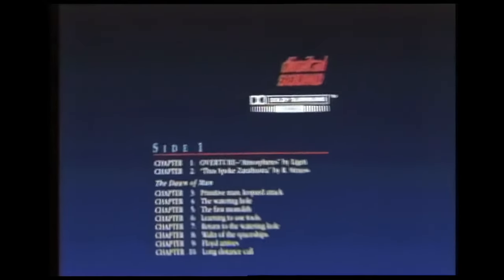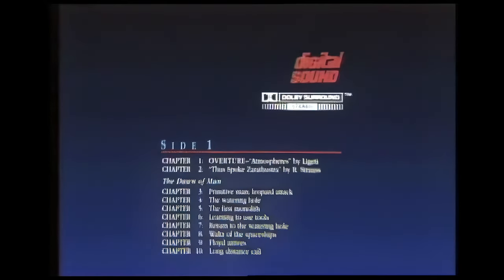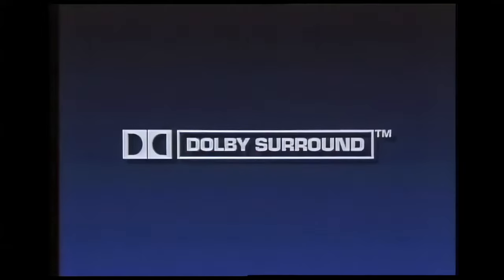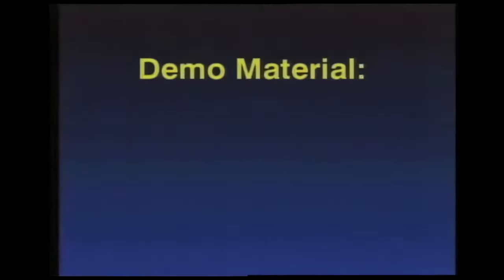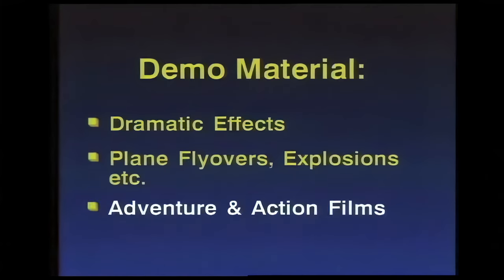Dolby Surround programs on tapes and discs are often identified with the Dolby Surround logo. In some cases, however, especially with older releases, the packages may not have been marked. The Dolby Stereo logo in the end credits of the movie itself confirms the soundtrack has been properly encoded. For demonstrations, you'll want to select titles having dramatic effects. The best way to find these is to simply watch a few movies and to take note of the prominent effects.